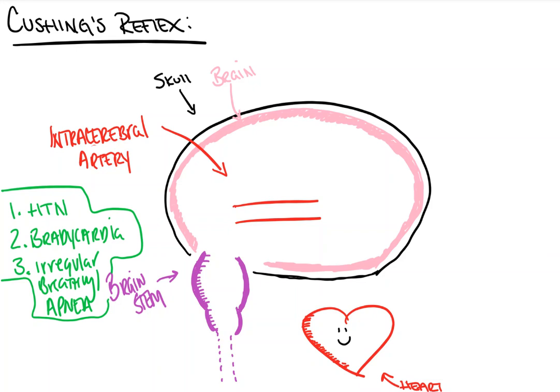Now let's talk about how we get to it and why it happens. We need to remember that the skull is non-compliant. Compliance, as an equation, is change in pressure over change in volume — it looks at a structure's ability to expand to accommodate more volume so that pressure doesn't rise. Pressure and volume are inversely proportional, so if we can expand our volume, the pressure will go down. That's why the left ventricle needs to be compliant — it must stretch and fill with blood, otherwise pressures would get super high. The skull, though, doesn't stretch because it's bone, so it's non-compliant.